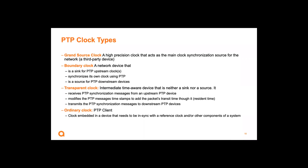A boundary clock is a switch that can act as a sync or receiver for PTP messages from upstream clocks, such as a grandmaster or another boundary clock. When it receives synchronization information, it uses it to synchronize its own clock. It then becomes the source of synchronization for downstream devices, terminating a PTP conversation on one side and starting another on the other side with different roles.